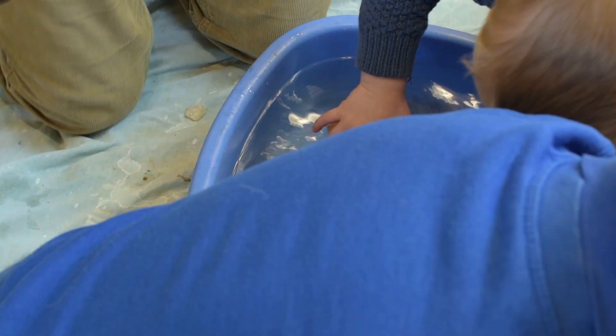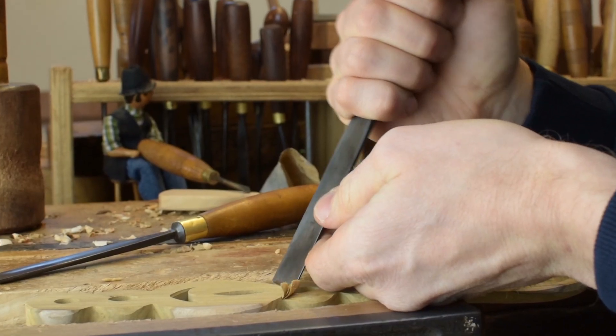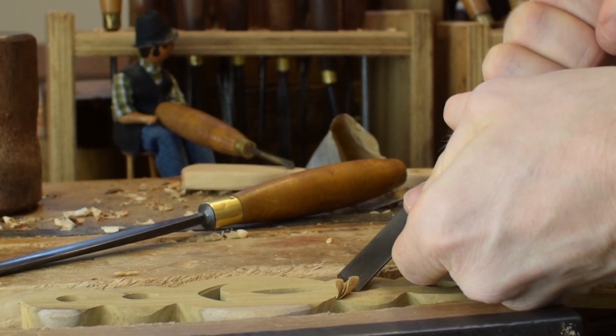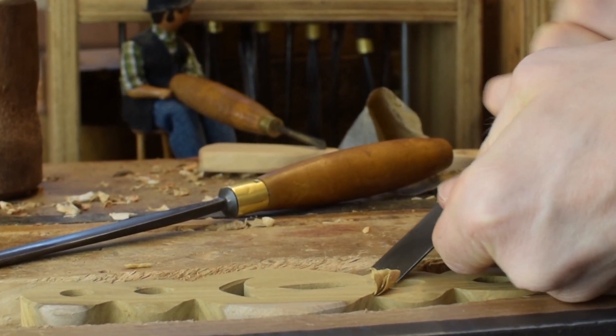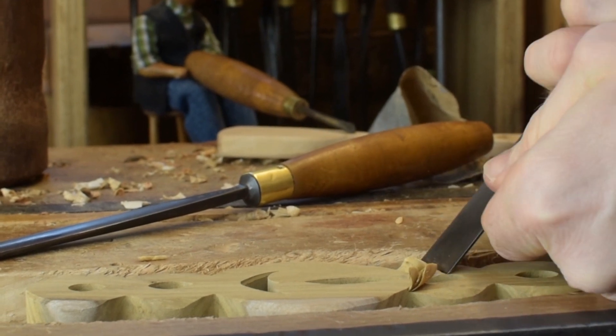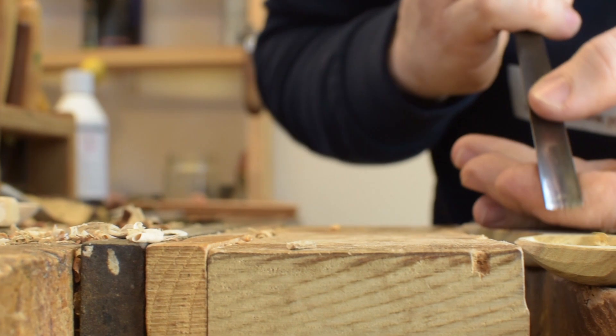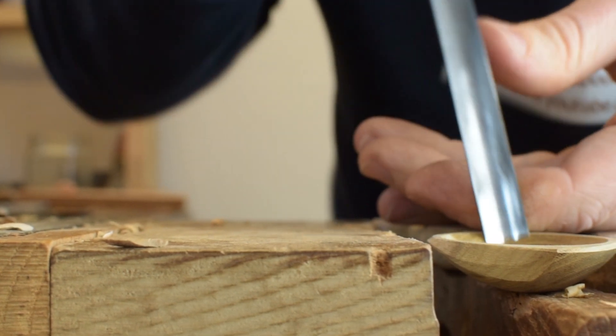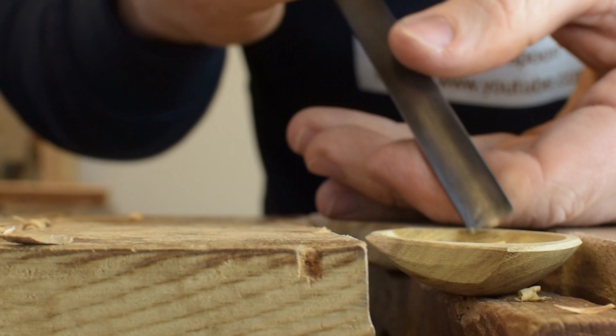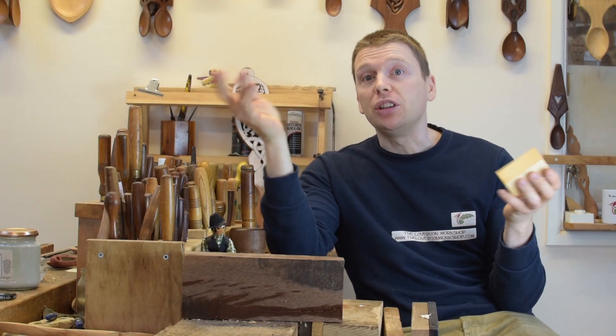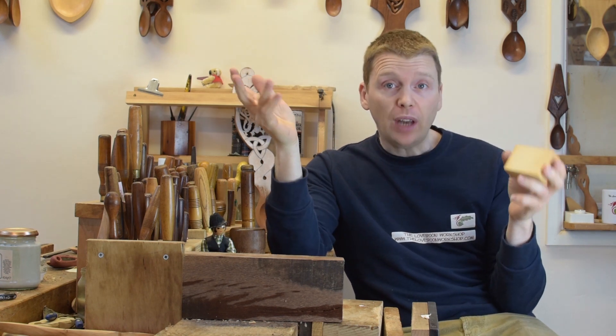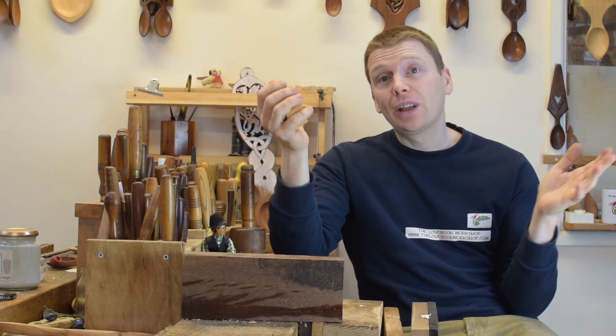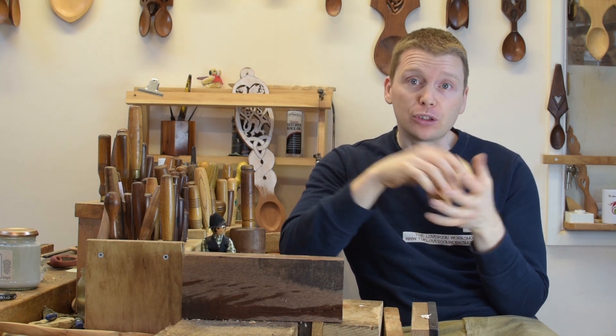So there we go. Those are some examples of different woods where some float and some sink. A bit of fun with the boys showing them how not all wood floats. Hope you enjoyed that video, hope somebody finds it useful as well. Thank you all again for watching and we'll be back soon with more videos.